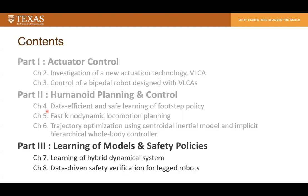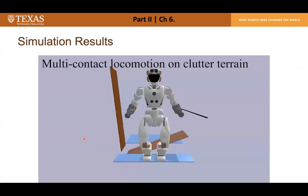In the previous video the robot is touching the wall — the optimizer finds that it must touch the wall and determines the contact position, timing, and reaction forces to be generated from the wall. Finally, in the last part I study data-driven approaches for dynamics modeling — specifically dynamics model learning and safety verification for general legged systems.